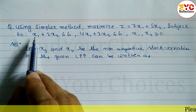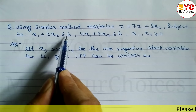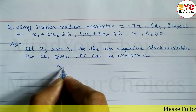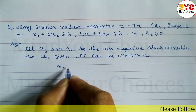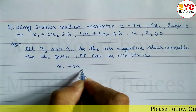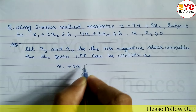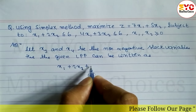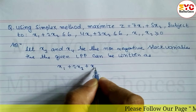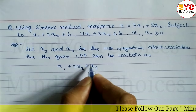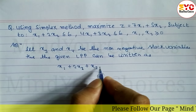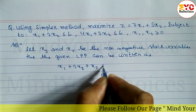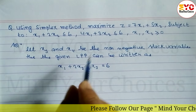The first constraint is x1 plus 2x2. We introduce a non-negative slack variable, so we add x3. The first inequality becomes x1 plus 2x2 plus x3 equal to 6.